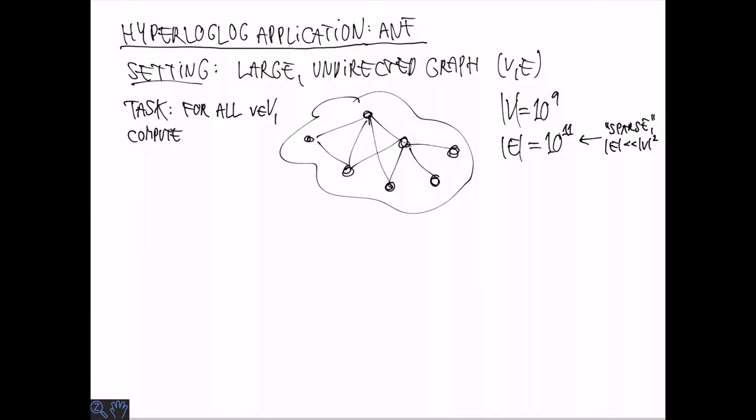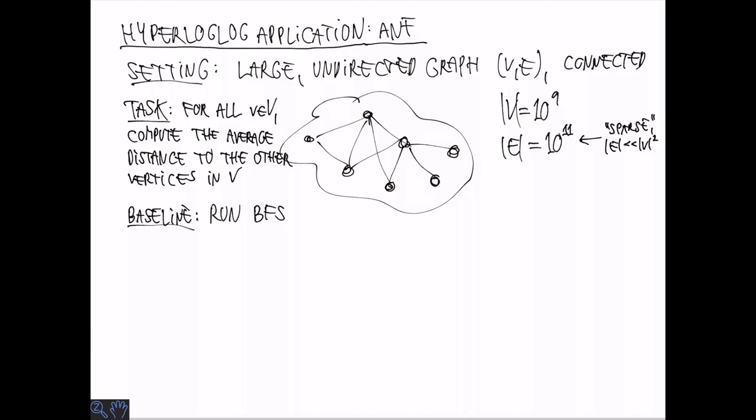What we want to do is to compute for every vertex v the average distance, the average shortest distance to all other vertices in v. If you like, the distance distribution of every vertex. This only makes sense if it's a connected graph, so let's assume that. A baseline algorithm what you could do after your first algorithms course is to run breadth-first search from each vertex, so that's size of v times. But for such a large graph this is just unfeasible, definitely on a single machine and even with parallelism it's challenging.